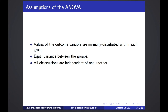A few assumptions we make in the ANOVA: we assume the outcome variable is normally distributed within each group — not necessarily overall, but within each group. We also assume the variance within each group is equal. And we assume observations between different individuals are independent, meaning no repeated measures from the same individual, as that would introduce correlation between measurements.